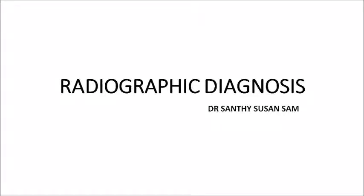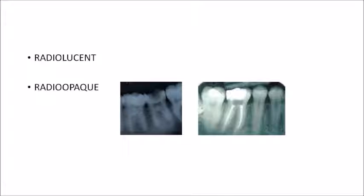Let's begin with the next chapter: radiographic diagnosis. Basic terms — radiolucent means they allow the passage of radiation and appear black in color. Radiopaque means they do not allow the passage of radiation and appear white in color. Enamel in an X-ray appears white, which means it is radiopaque. The pulp appears black, which means it is radiolucent in nature.